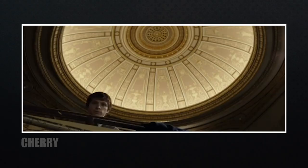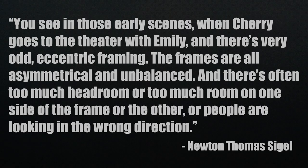Before Cherry dives into the world of drugs, he struggles with being at home and the abrupt transition from soldier to civilian. For this chapter, they went back to the Todd AO lenses because we're back in his original environment, but intercut with specific scenes using the Hawk X lenses. Even though they had the same Todd AO lenses, the framing was altered to match Cherry's feelings of being out of place — very odd, eccentric framing with asymmetrical, unbalanced compositions, often too much headroom or too much room on one side, where people are looking in the wrong direction. This awkward, unbalanced framing was a good way to bring us into Cherry's world of PTSD. The framing, lighting, and lenses all helped to show these transitions.